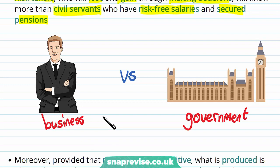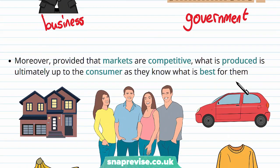Business people have much more risk attached to their decisions and therefore are more motivated compared to government civil servants, who have relatively little information and would make incorrect decisions given that they do not operate directly within the market and have no stake within it.